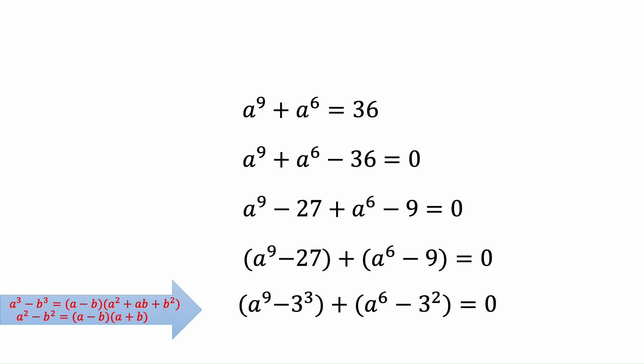Now for the simplified equation that we have, we can use this formula. These two formulas that are so famous: a to the power 3 minus b to the power 3 we can write it as 2 multiplication. And again, a to the power 2 minus b to the power 2, we can write it as 2 multiplication again.